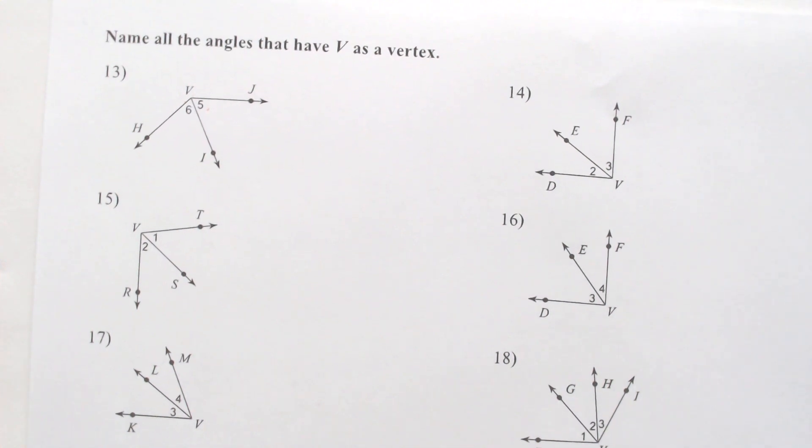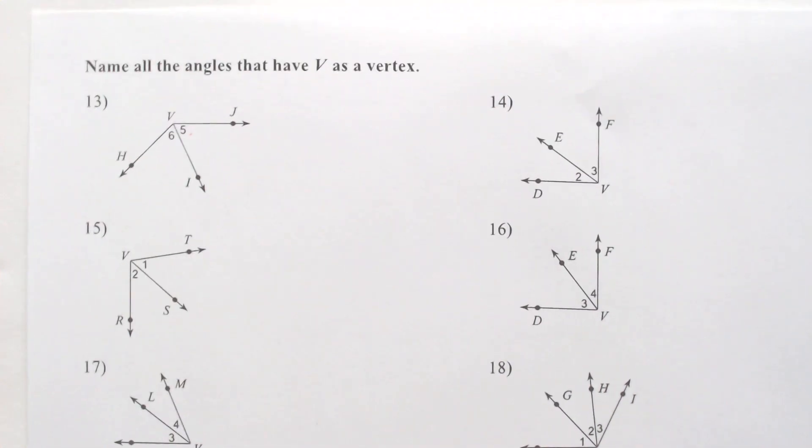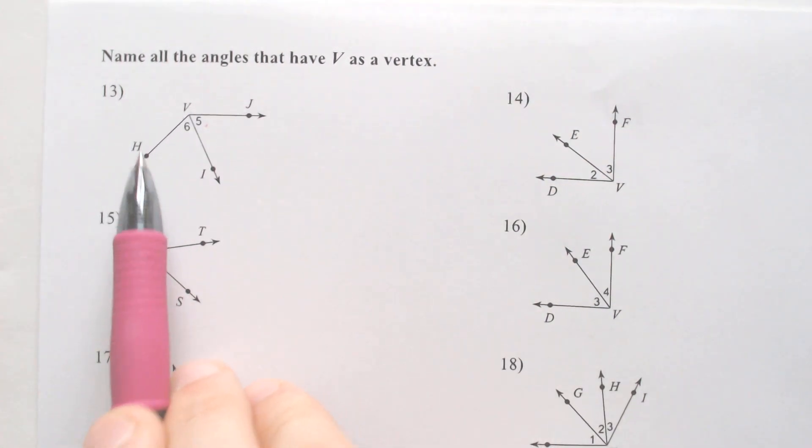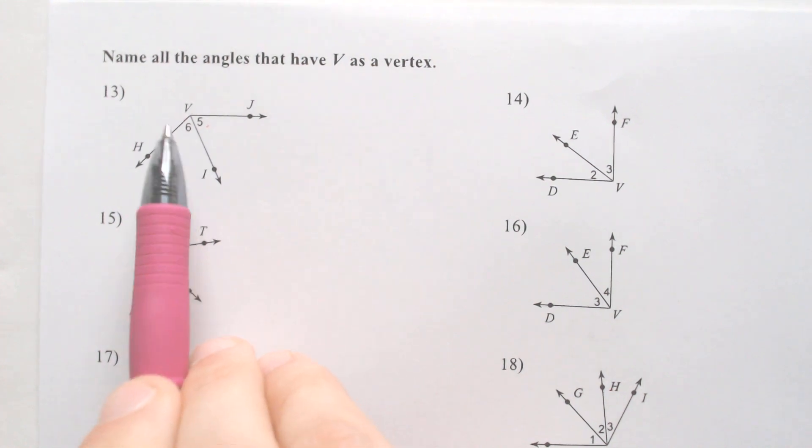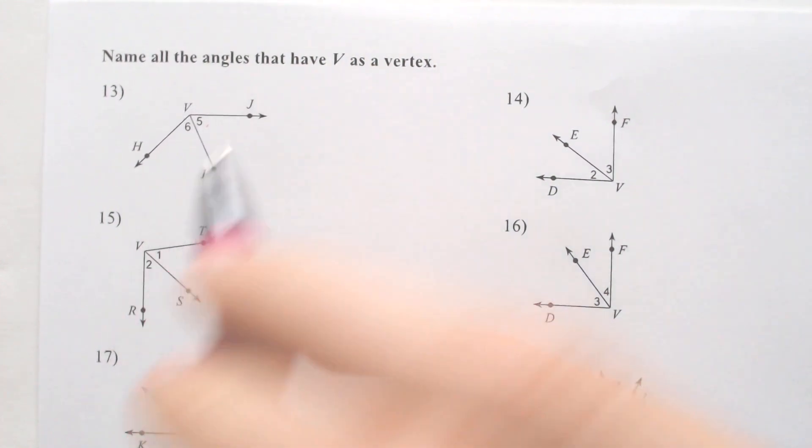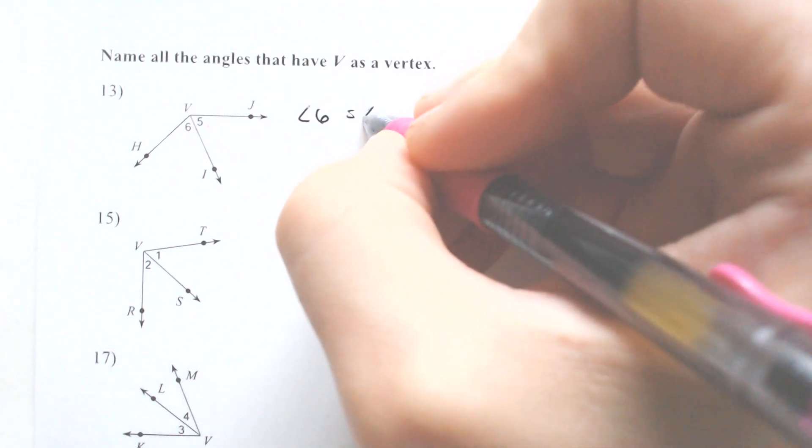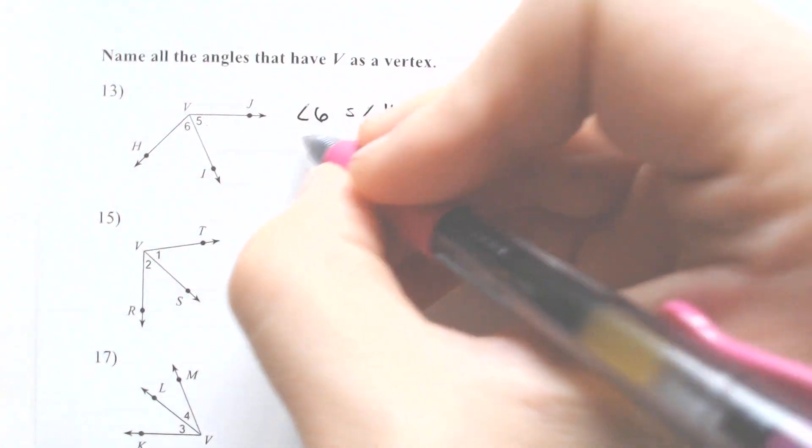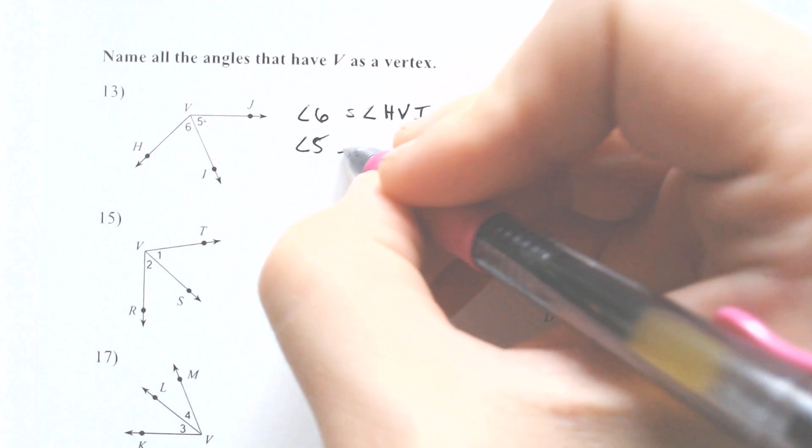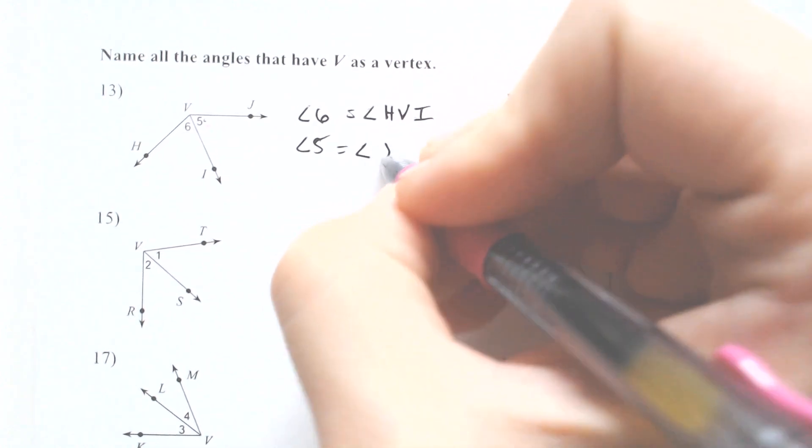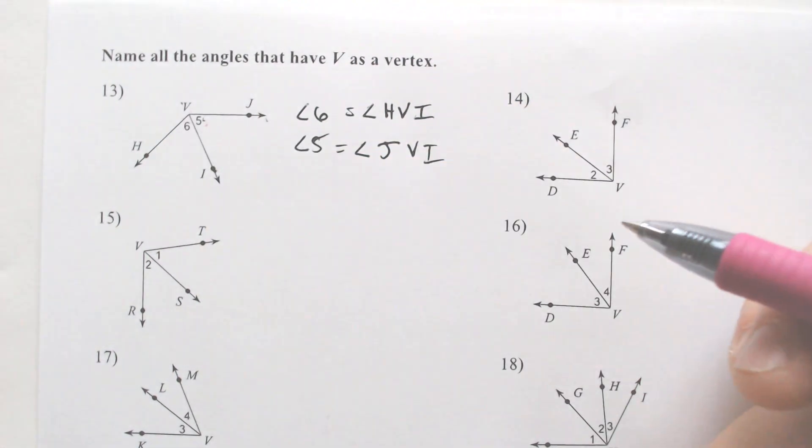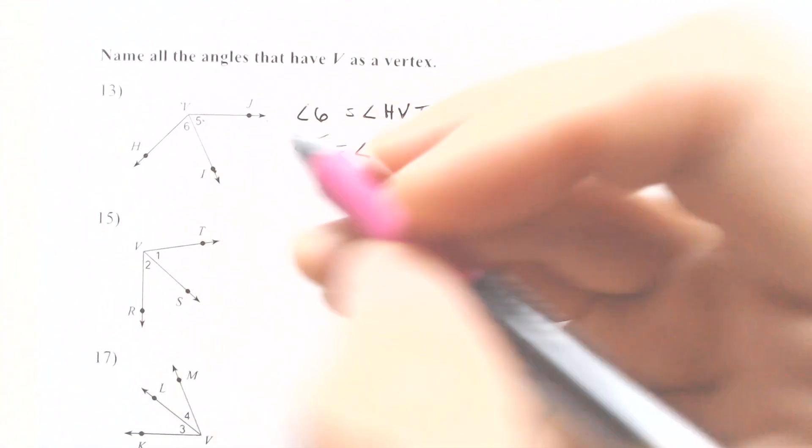Name all the angles that have V as a vertex. Now, this is where a lot of students sometimes get lost. So we do have angle 6 as an angle with V in the vertex. So angle 6 is equal to angle H V I. Angle 5 on the other side is equal to a vertex with V in the middle. It is equal to angle J V I. You could also flip the order and write I V J.